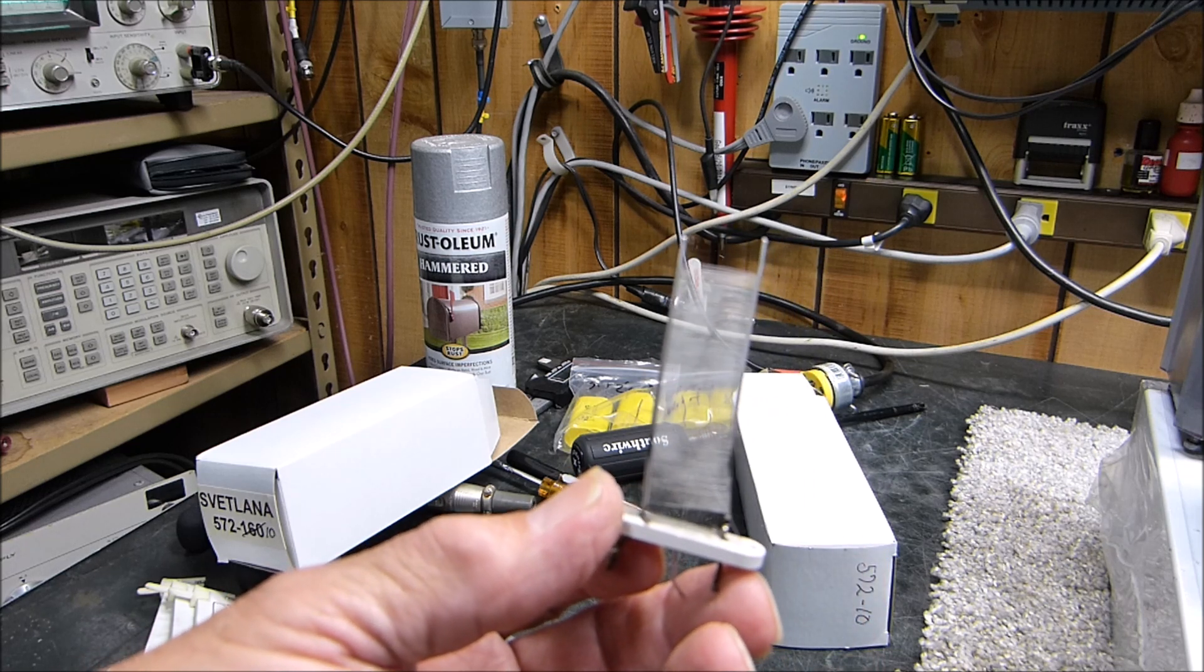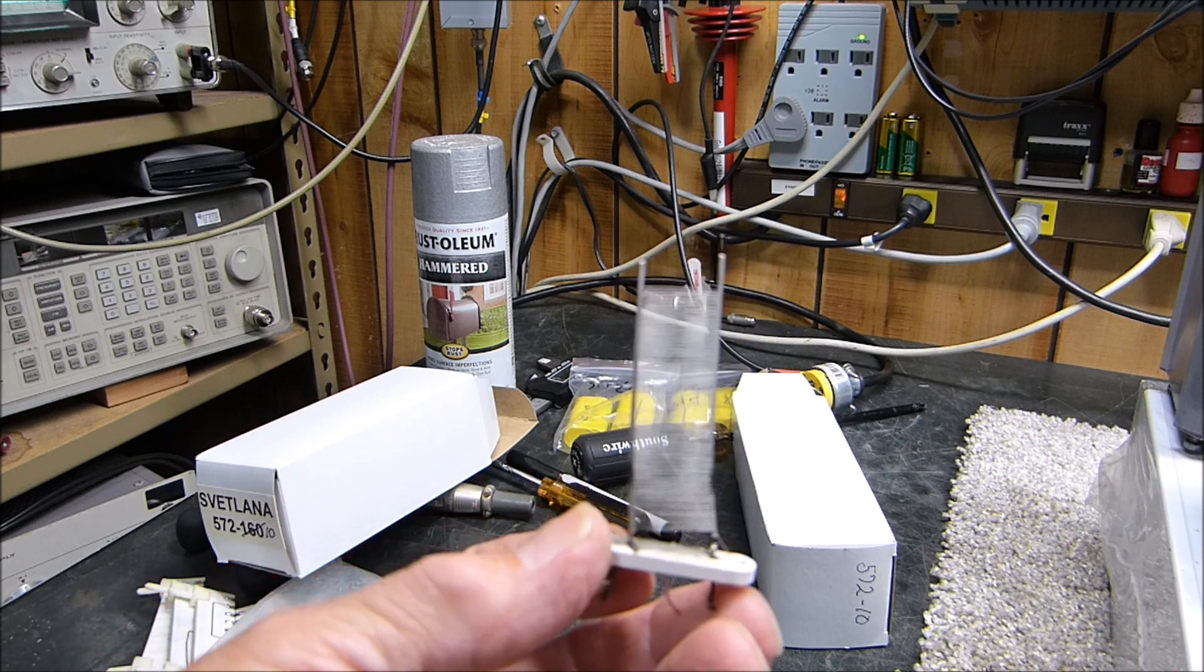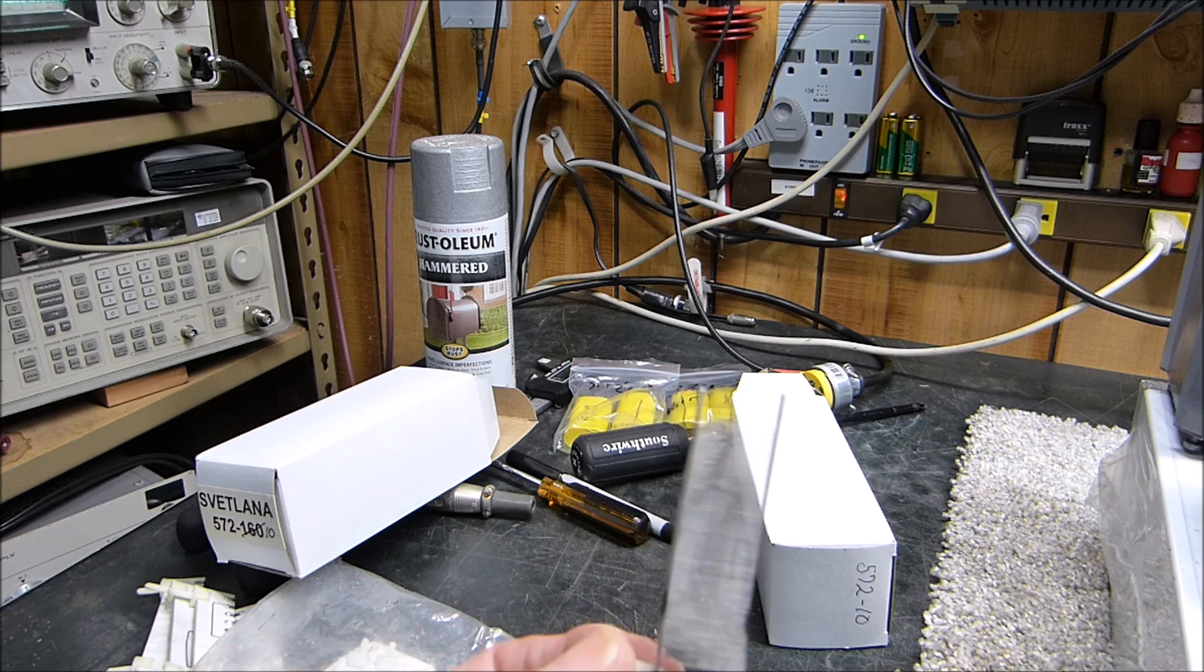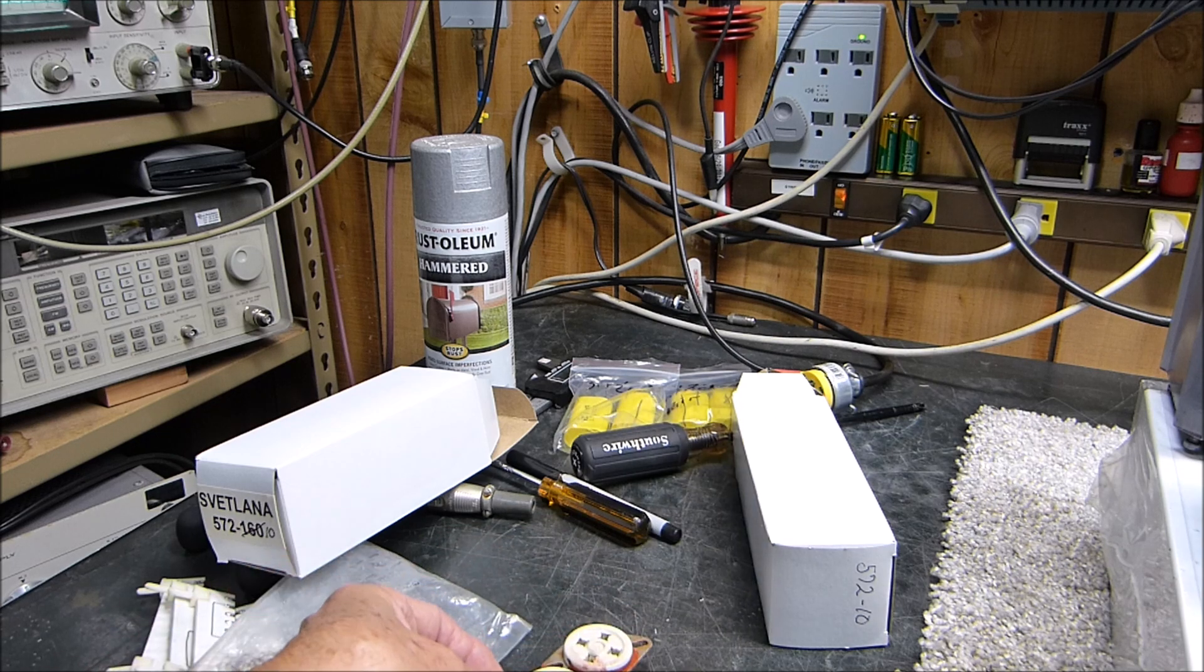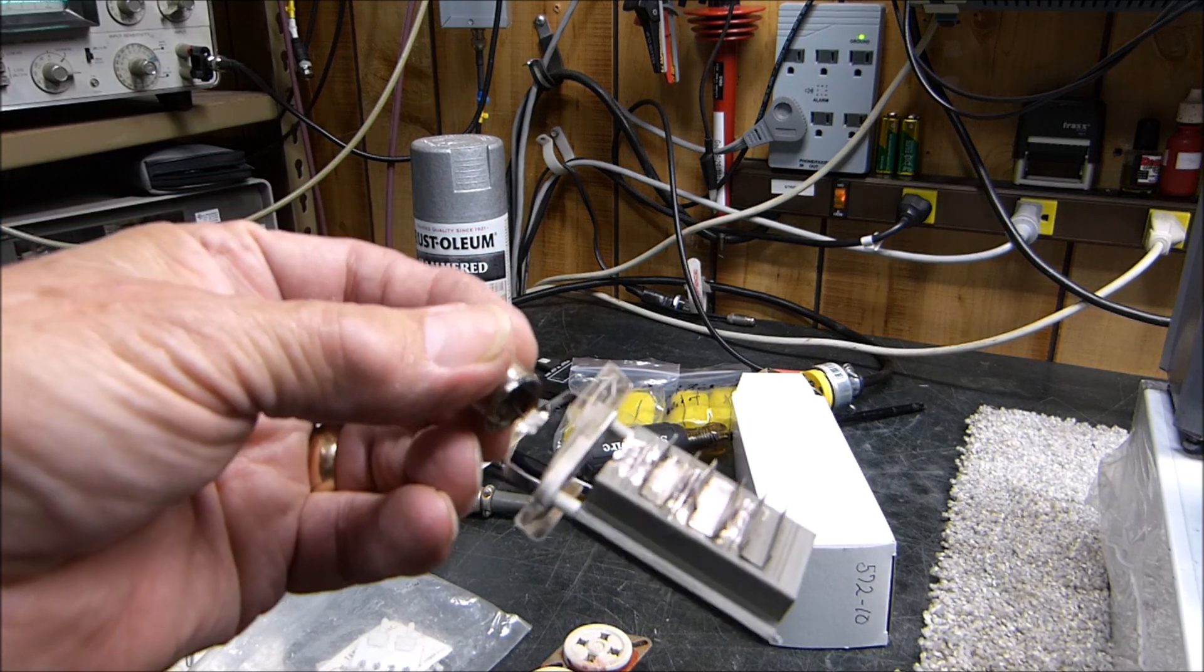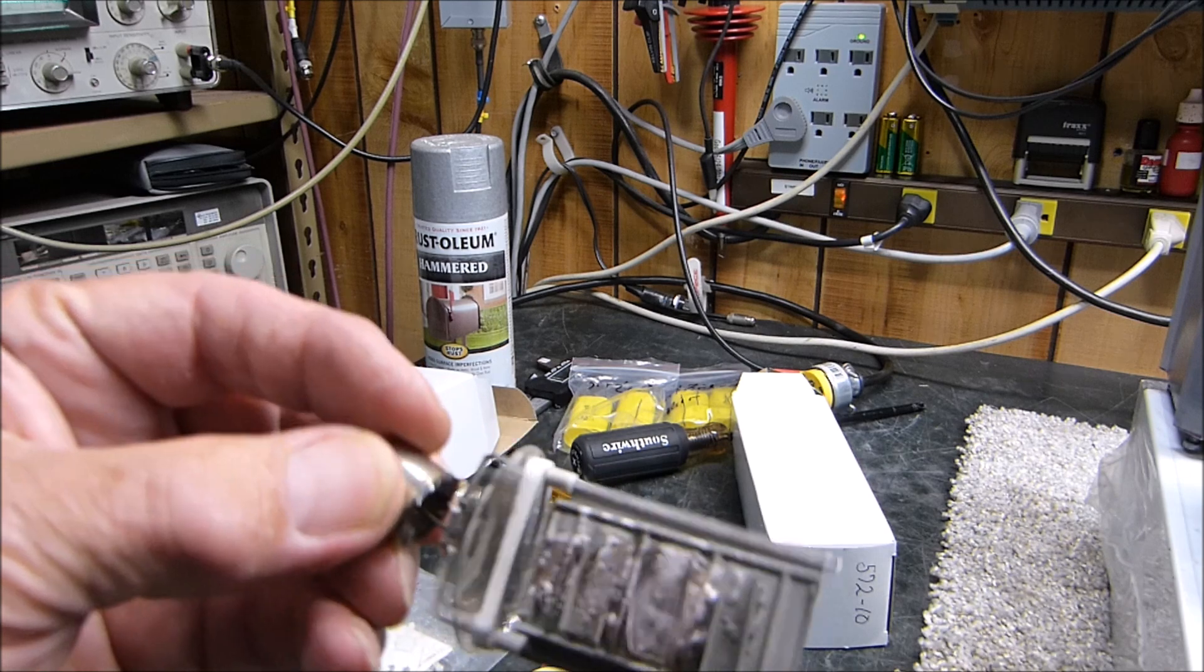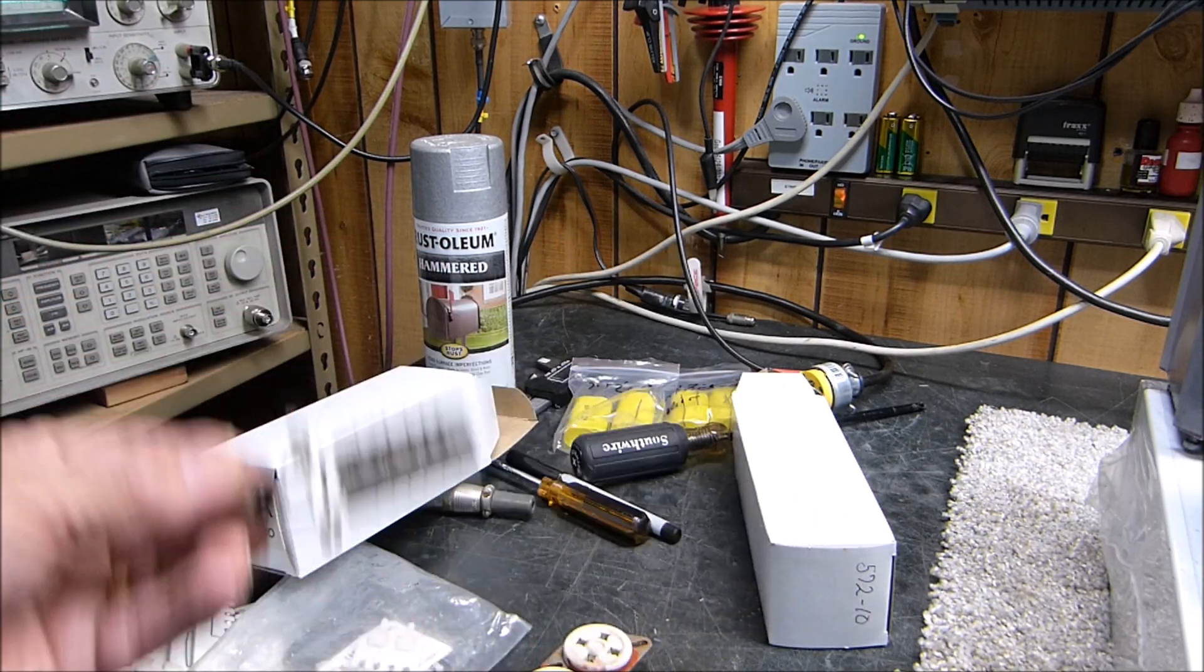But if you put high voltage on the plate and ground the cathode and you don't put some bias on it, then you're going to melt your tube really quick. And look at this one. Speaking of melting tubes, this guy right here, look at that poor thing. Man, that thing has been hot, hasn't it? Holy cow, there's like a hole melted in it. I don't think I changed them any time too soon.